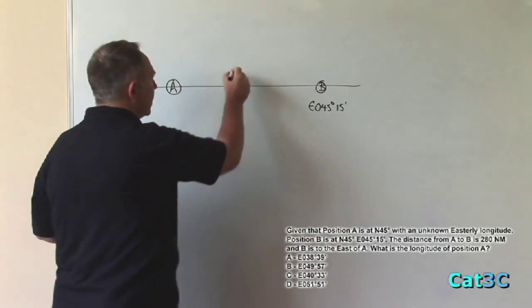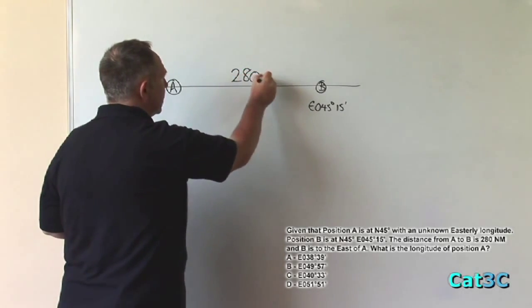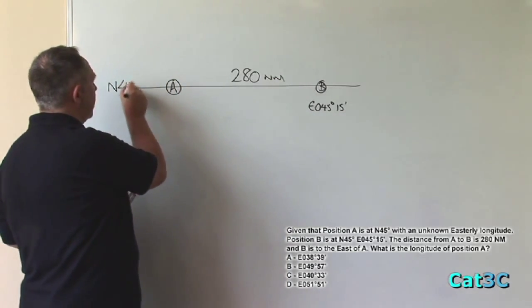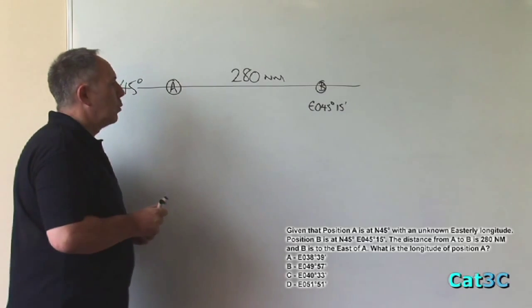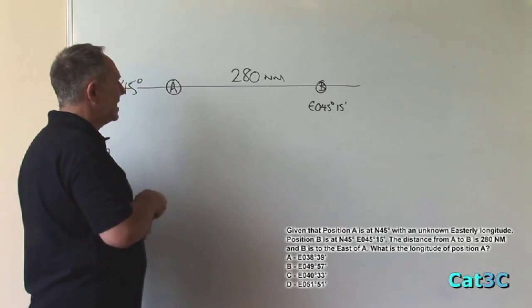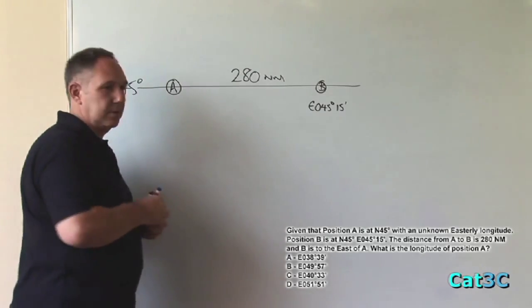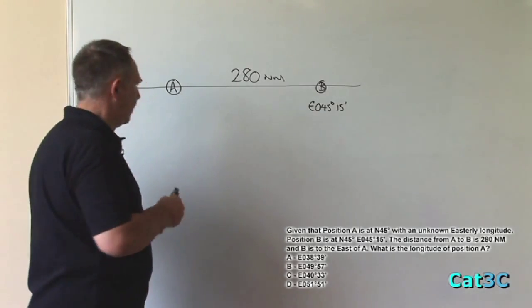To help us, we have the distance 280 nautical miles and we know that both positions are on the same latitude. So what formula do we use where we have a distance, a change of longitude and a common latitude? That would be the departure formula.